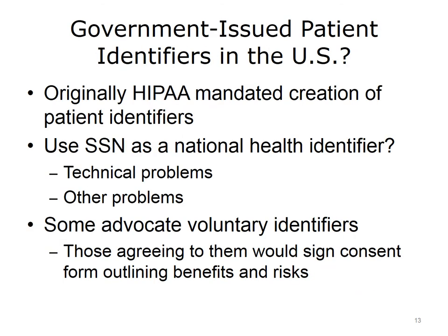Should there be government-issued patient identifiers in the United States? This was actually mandated by the original HIPAA legislation in the mid-1990s, but there was tremendous political pushback and that requirement was postponed and eventually abandoned. Some have suggested we already have a national identifier — the Social Security Number — but it is a poor identifier. Even the Veterans Administration, which used the Social Security Number as its patient record number for many years, moved away from it.